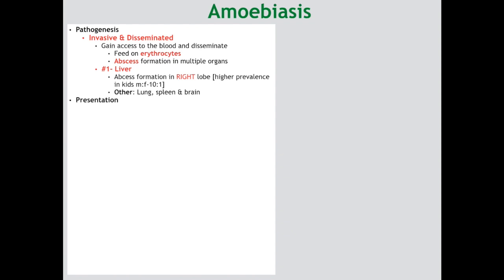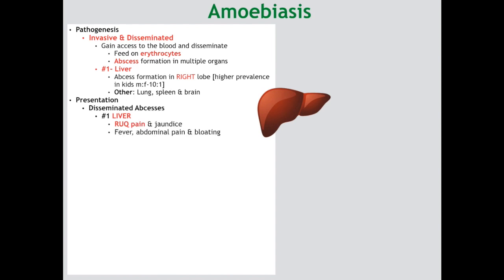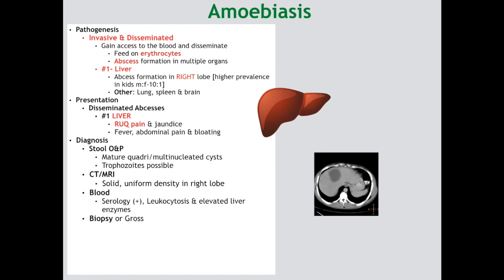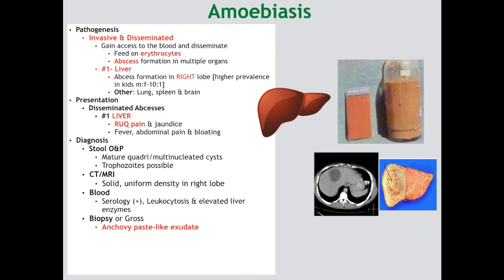The most common clinical presentation is the liver abscess: your patient will present with right upper quadrant pain and jaundice. Other possibilities include fever, abdominal pain, and bloating. Diagnosis is on stool O&P, where you observe mature quadri- or multinucleated cysts, confirmed on CT or MRI showing a solid uniform density lesion usually in the right lobe. Blood serology is possible, and within a liver abscess case you can also observe leukocytosis and elevated liver enzymes. A high-yield testable point is that the abscess will be filled with an anchovy paste-like exudate on biopsy or gross examination.